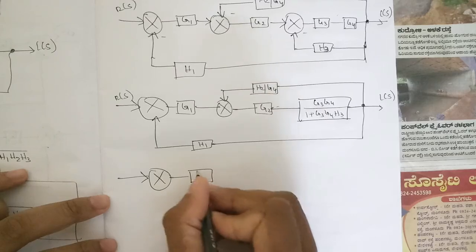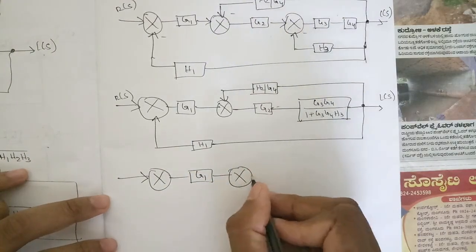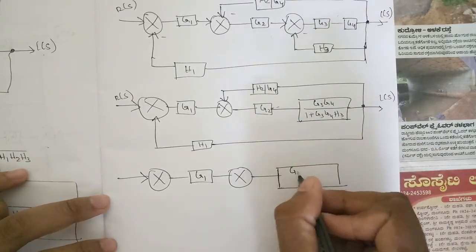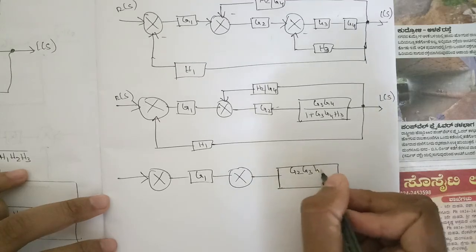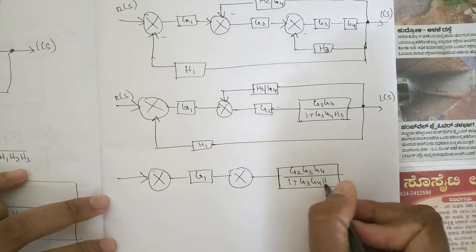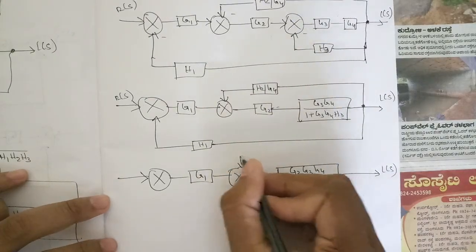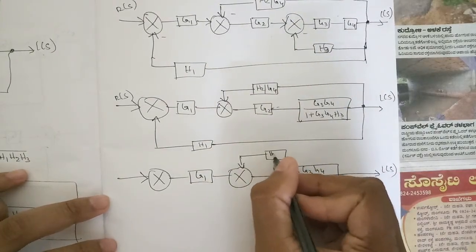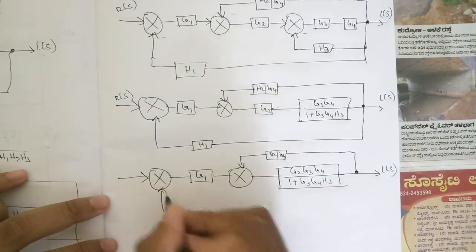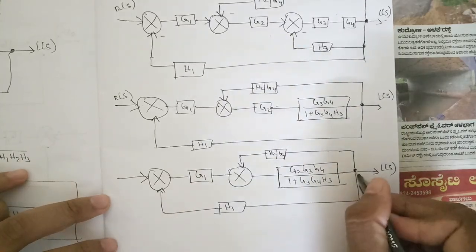Summing point, G1, another summing point, these two are in series converted into a single block: G2, G2, G3, G4 divided by one plus G3, G4, H3, C of S, H2 by G4, H1, right.